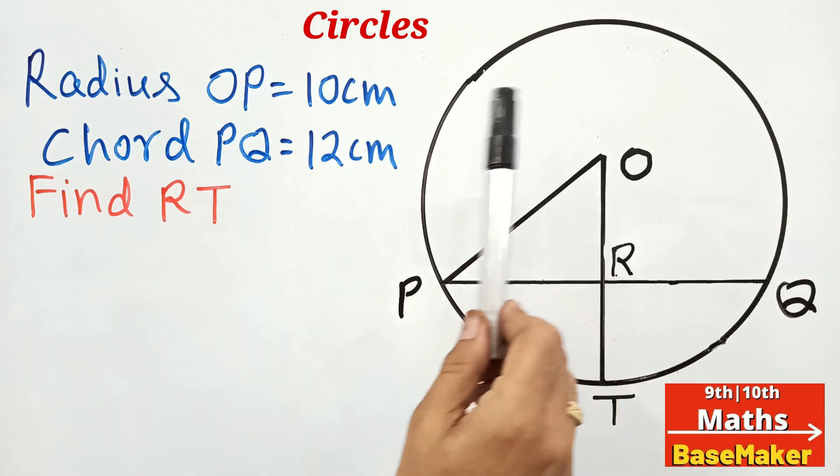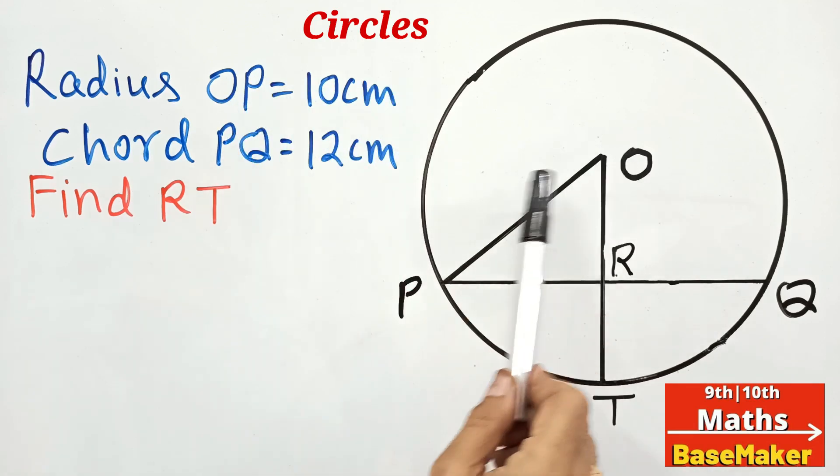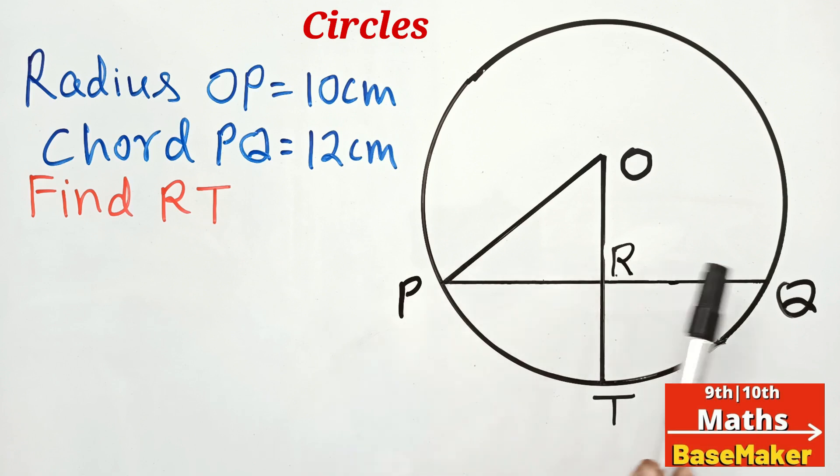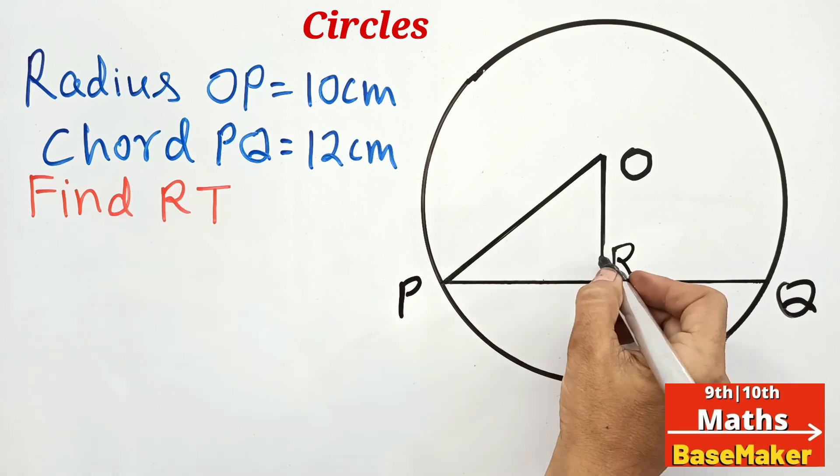My dear student, in this question the radius of circle OP is given as 10 centimeters and chord PQ is given as 12 centimeters. OR is perpendicular to PQ and we need to find the length of RT.